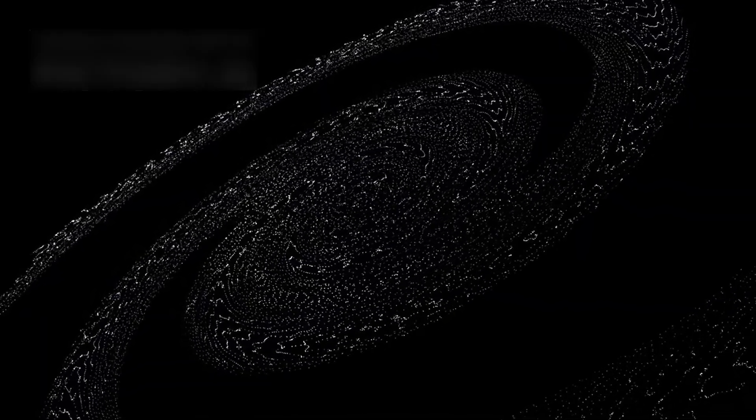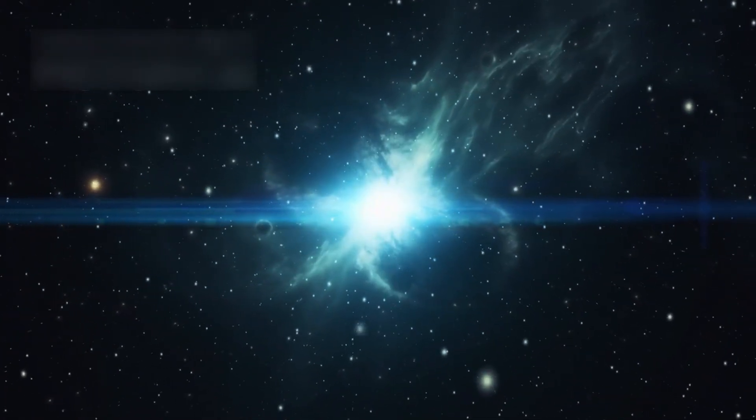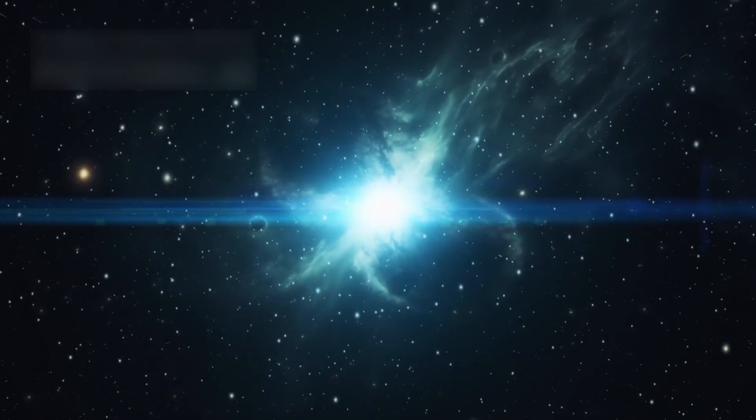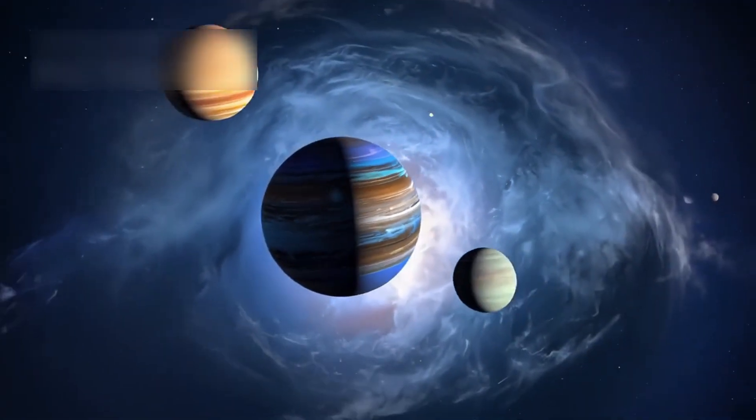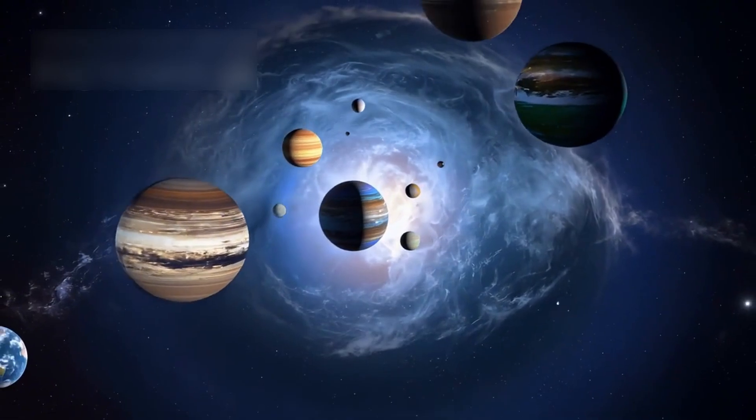Galaxies form clusters like the Virgo supercluster with 1,500 known galaxies. This is part of the Laniakea supercluster, spanning 520 million light years of space. Laniakea means immense heaven in Hawaiian, fitting for this cosmic region.